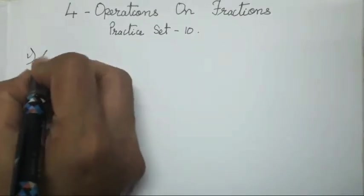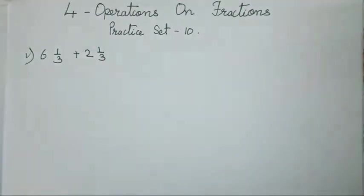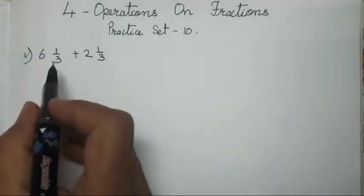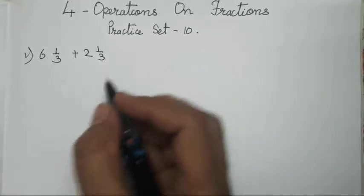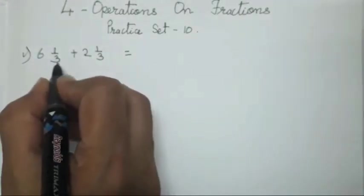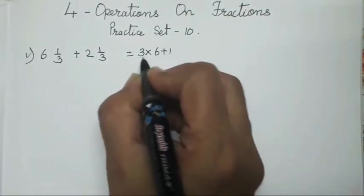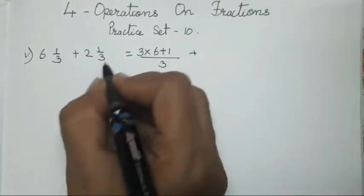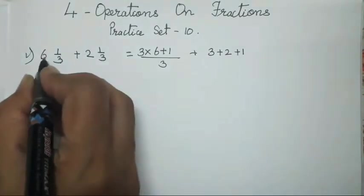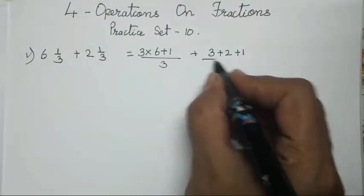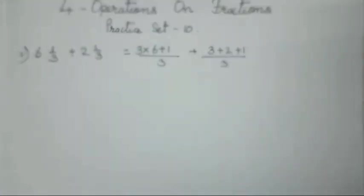Addition is very easy. The first sum is 1 upon 3 plus 2, 1 upon 3. The first thing you all have to do is check the denominators of both fractions — are they equal? Yes, they are. So what you all have to do is change it into an improper fraction: 3 into 6 plus 1 upon 3, plus 3 into 2 plus 1 upon 3. I have already shown how to change a mixed fraction into an improper fraction, so the same step you all have to do here.